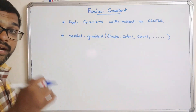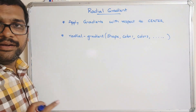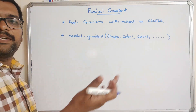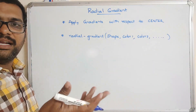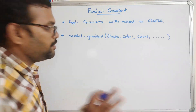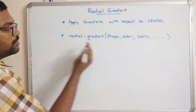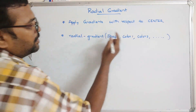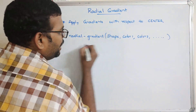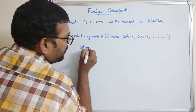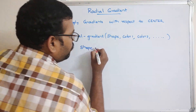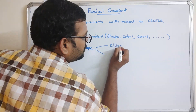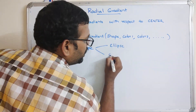We need a minimum of two colors to represent a gradient, because gradient means displaying multiple colors with a smooth transition. The Shape parameter holds two values: one is Ellipse and another is Circle.